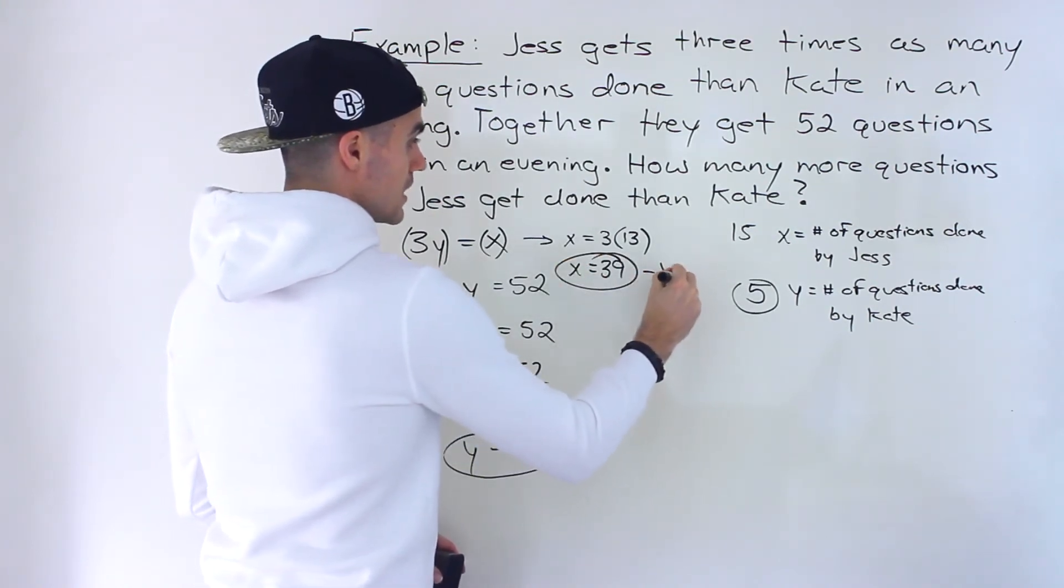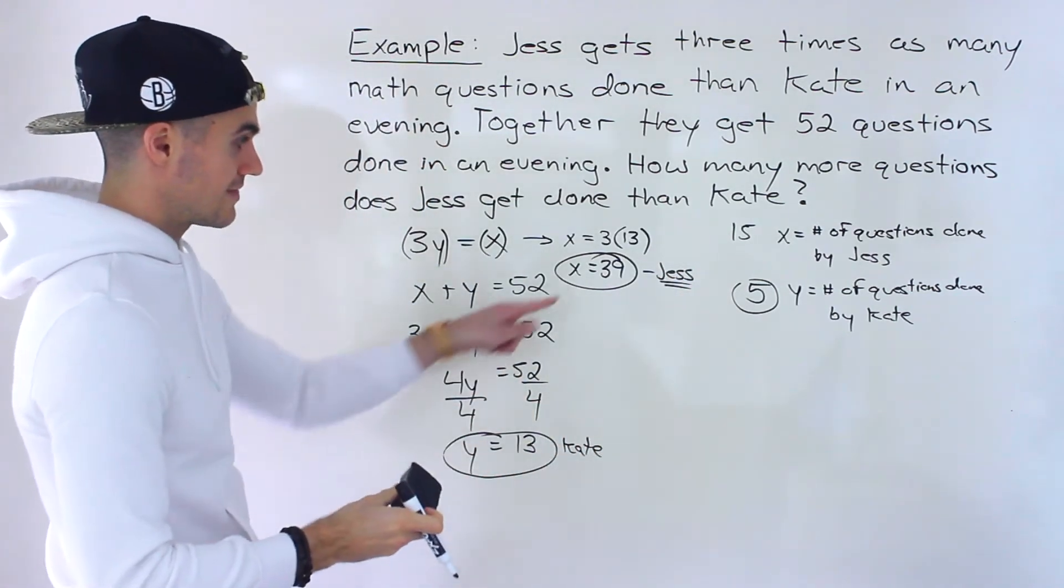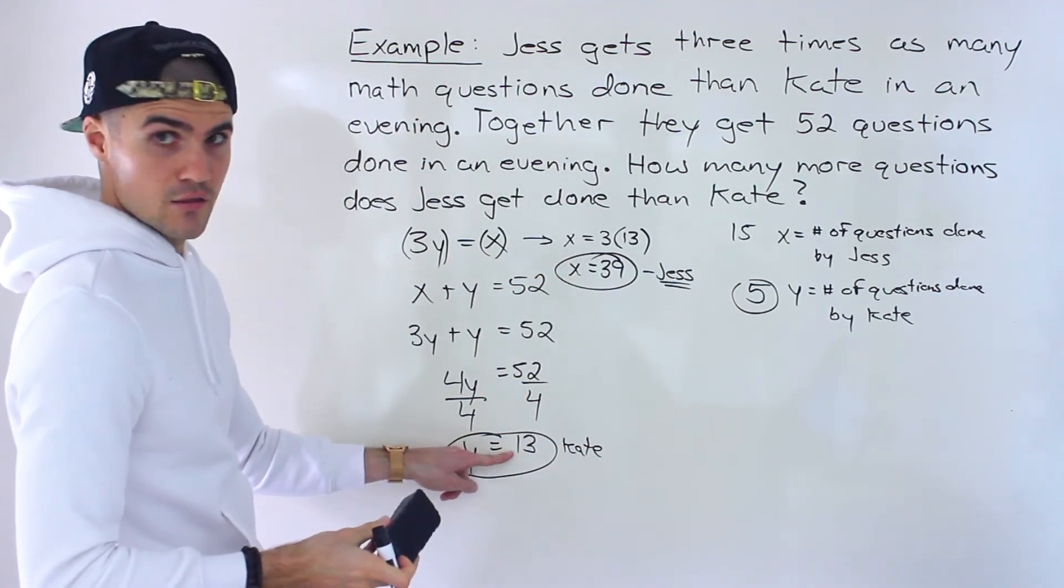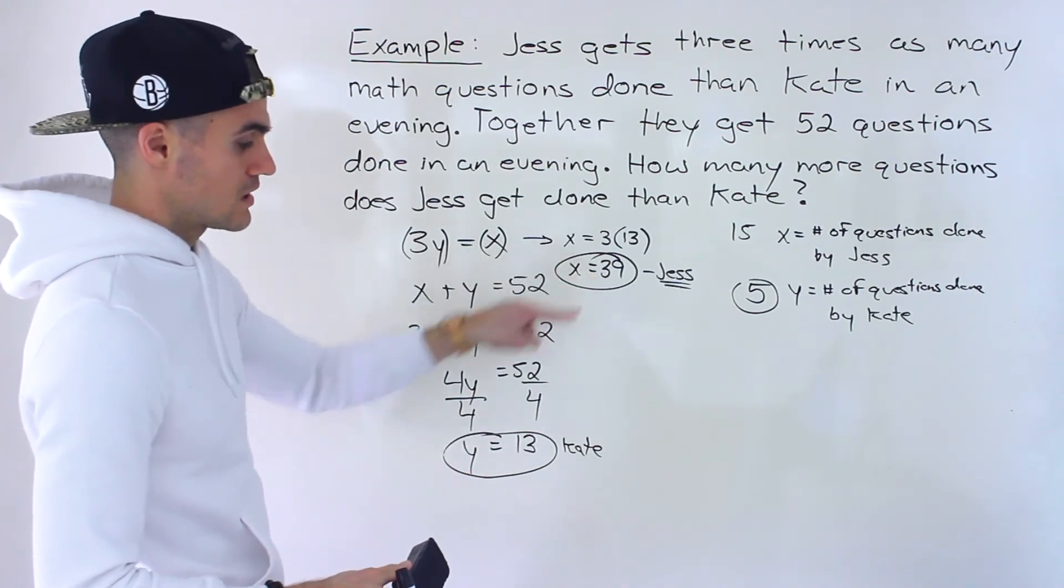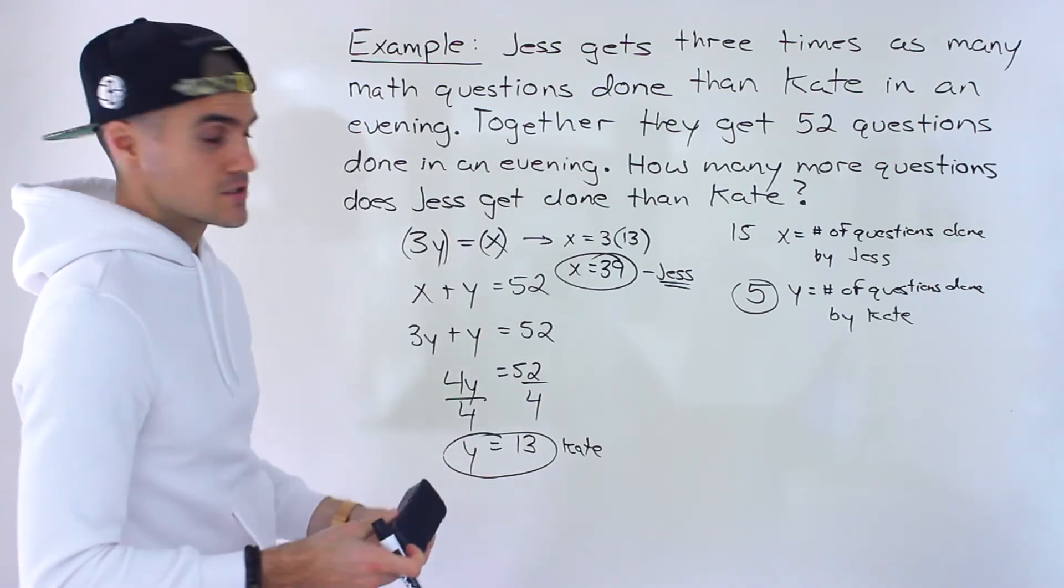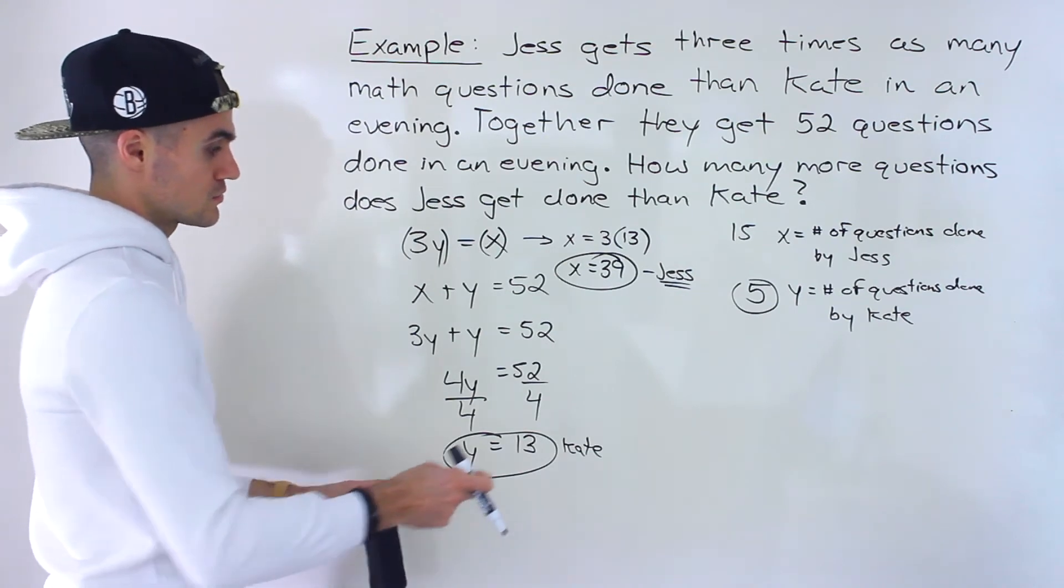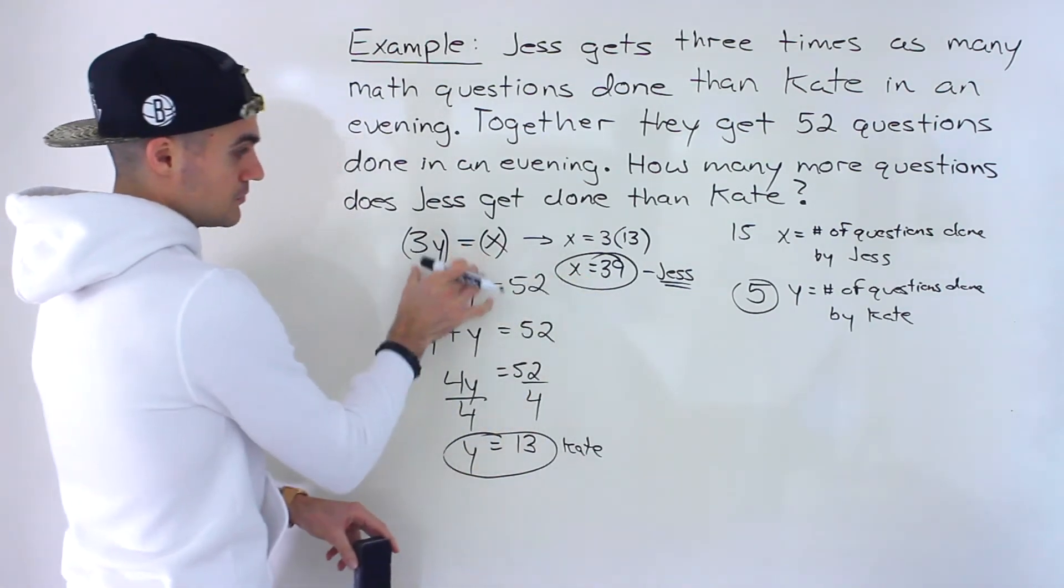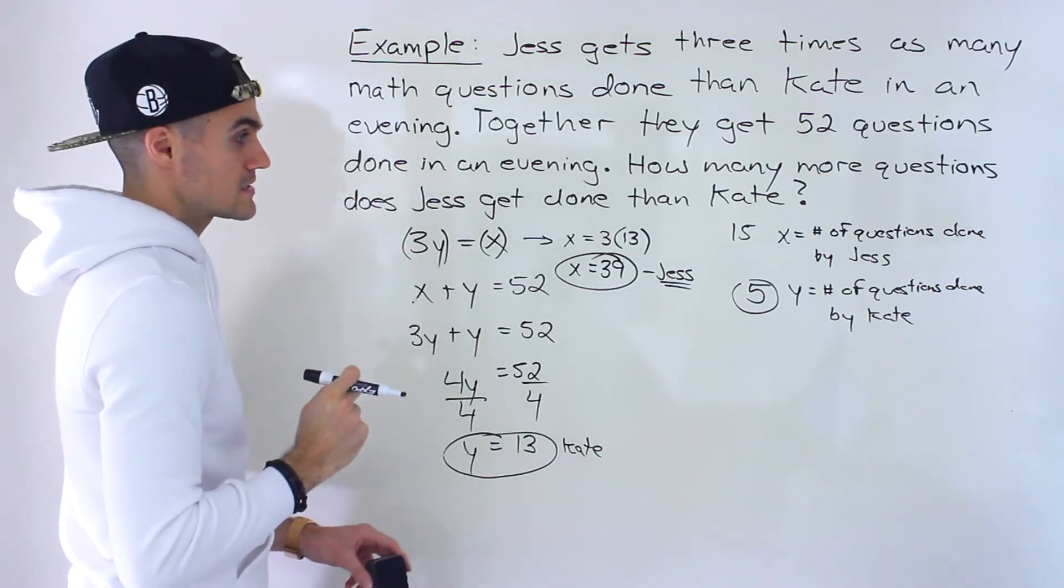So that's the number of questions done by Jess. And then you could do a quick check, notice that this is 3 times that, 13 times 3 is 39. And then notice if we take 39 and add 13, we would end up with 52. Okay, so it checks out. That's how you could verify your solutions. You could take these, plug them into the two equations, make sure that the left side is equal to the right side.